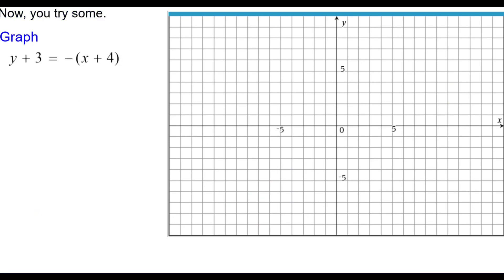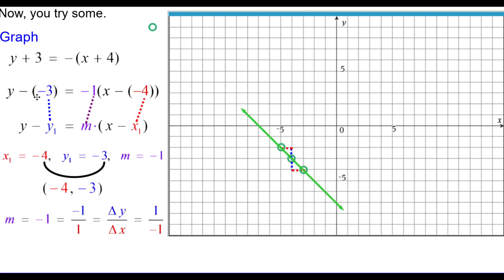Now you try one. Graph y plus 3 equals the opposite of the quantity x plus 4. Rewrite as y minus negative 3 equals negative 1 times the quantity x minus negative 4. The three values are: x sub 1 is negative 4, y sub 1 is negative 3, and slope is negative 1. Plot the point negative 4 comma negative 3, then use slope down 1 right 1, or up 1 left 1 to find more points and draw the line.